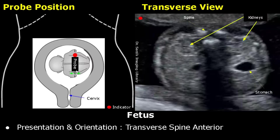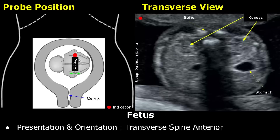For a transverse presentation, when you place the probe in longitudinal orientation over the uterus, you will get a transverse image of the fetus. If the spine is anterior, it will be seen at the top of the image. The stomach will be seen in the right half of the image. Similarly, the heart will also be seen in the right half. You can move the probe left and right to locate the fetal head and all other structures.